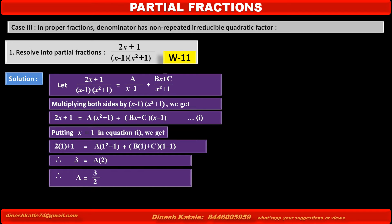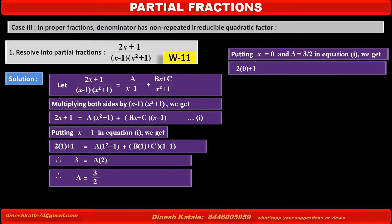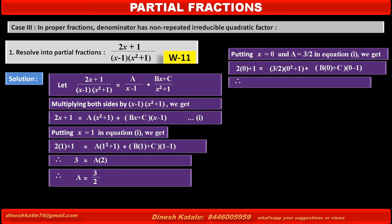Next, it is easy to find C by cancelling the B term. Putting x equals 0 and A equals 3 upon 2 into equation 1: the left-hand side becomes 2(0) plus 1 equals 1. The first term on the right becomes (3/2)(0 squared plus 1) equals 3/2. The second term becomes (B·0 plus C)(0 minus 1). Solving, we get C equals 1 upon 2.